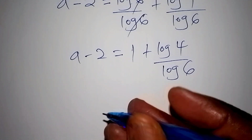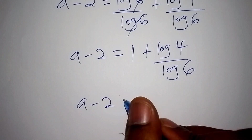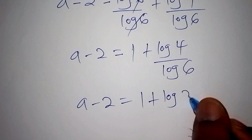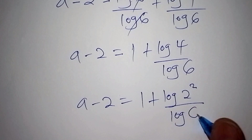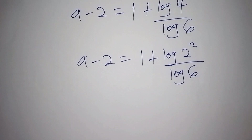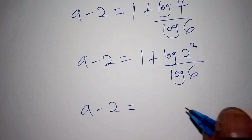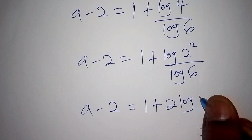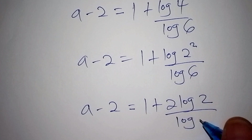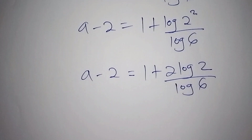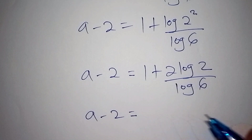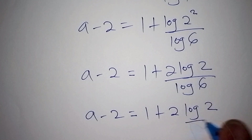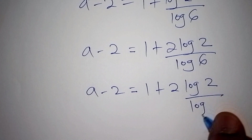So a minus 2 is equals to 1 plus, and log 4 can also be written as log of 2 to the power of 2, all over log 6. The log of 2 to the power of 2 can also be written as 2·log 2, all over log 6. So a minus 2 is equals to 1 plus 2·log 2, all over log 6.